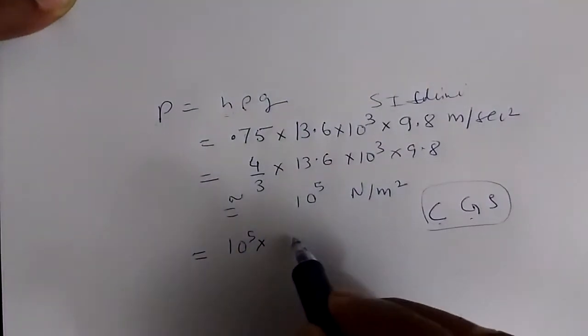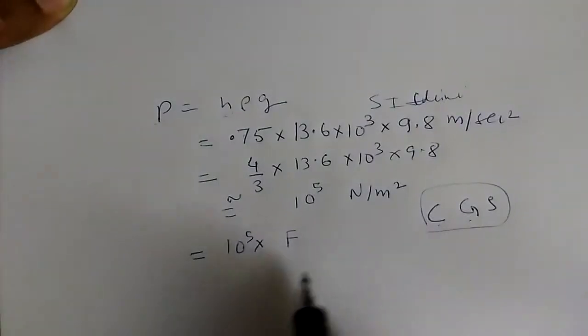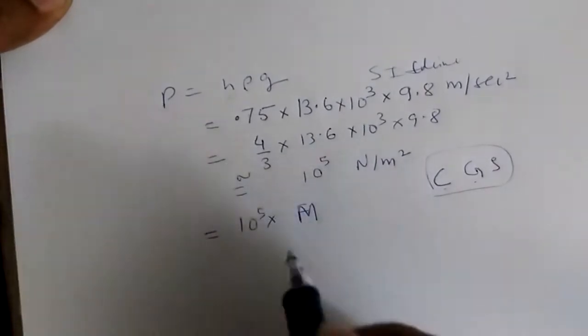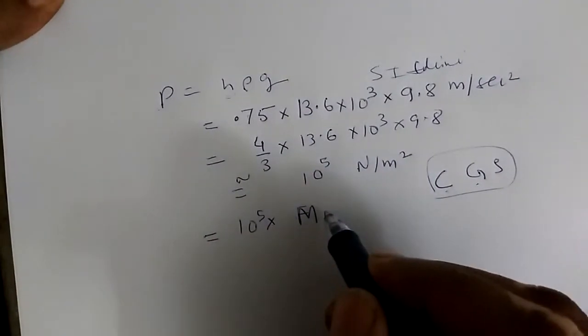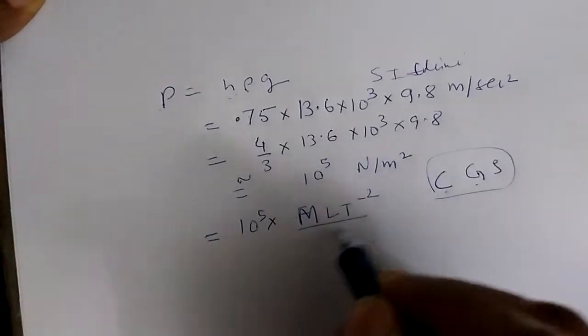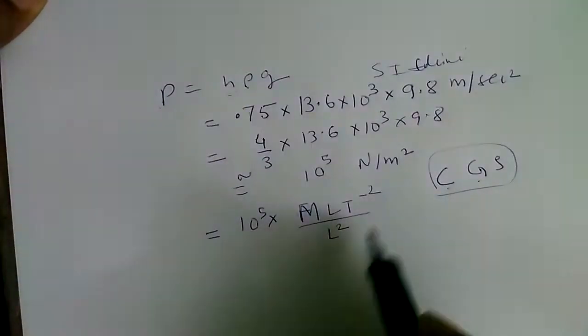So we can convert it into 10 to the power 5, Newton means what, force, multiplied by, Newton is force, and force is mass into acceleration, acceleration is Lt to the power of minus 2, divided by L square.